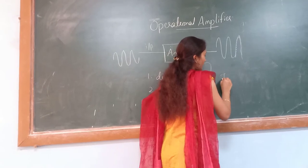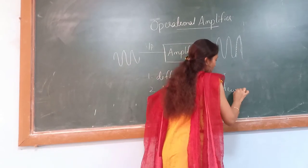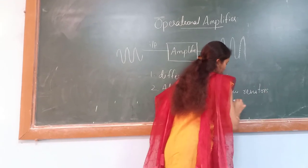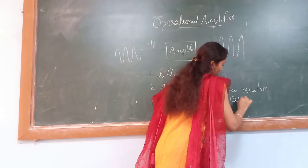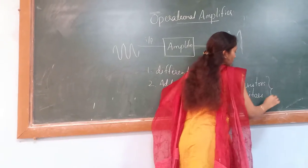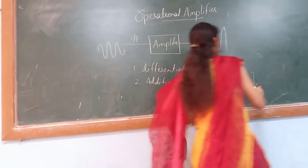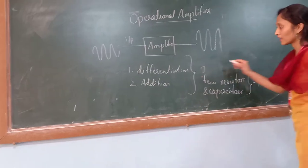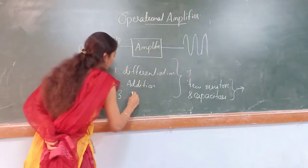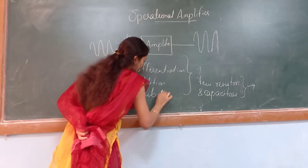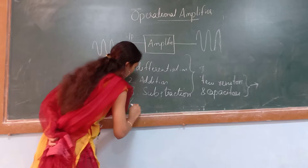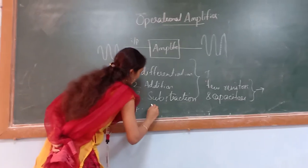By connecting a few resistors and capacitors, it is possible to perform mathematical operations — those are addition, subtraction, multiplication, and integration. These are the operations performed using the operational amplifier.